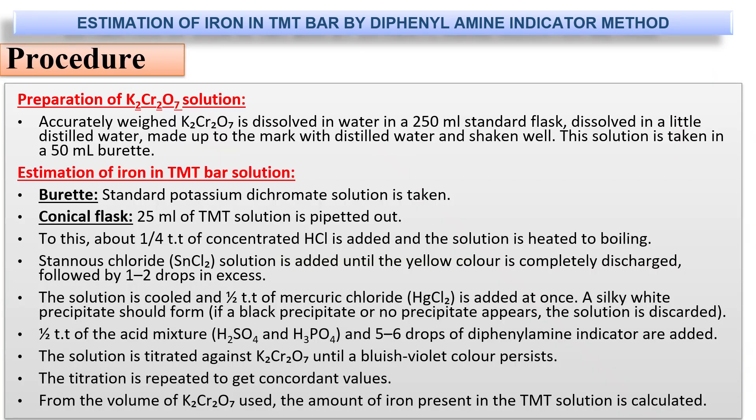Let us look at the procedure. Initially, we prepare the potassium dichromate solution. Accurately weighed potassium dichromate is dissolved in a 50 ml standard flask with a little distilled water, shaken well, made up to the mark, and filled into a 50 ml burette as the standard potassium dichromate solution.